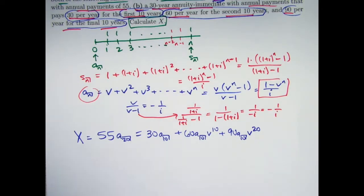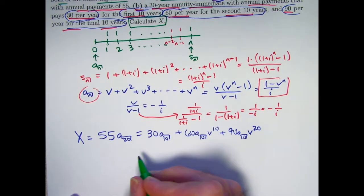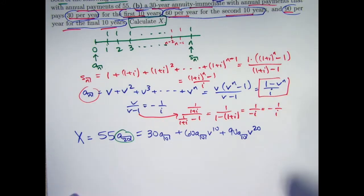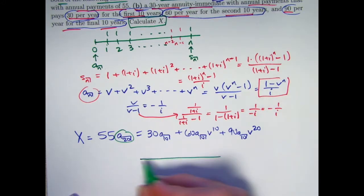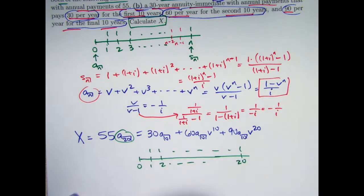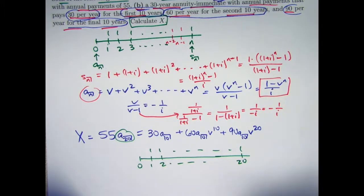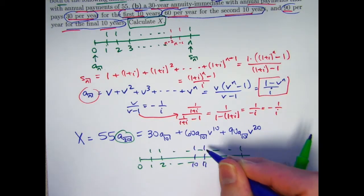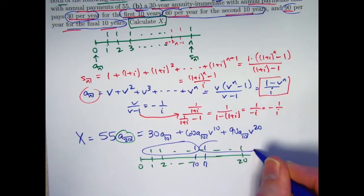OK. So both of these things are equal to X and we've got to find X, so it might not be clear what to do. It turns out that at least one way you can solve it is to write A_20 in terms of A_10 and then cancel all the A_10s. How can that be done? Well, what is A_20? A_20 would be the present value at time 0 of payments of 1 starting at time 1. That can be broken into two pieces. The first 10 payments and the second 10 payments.